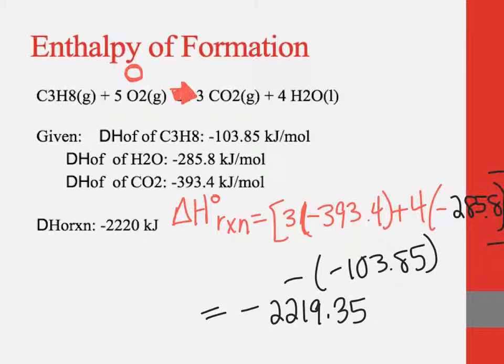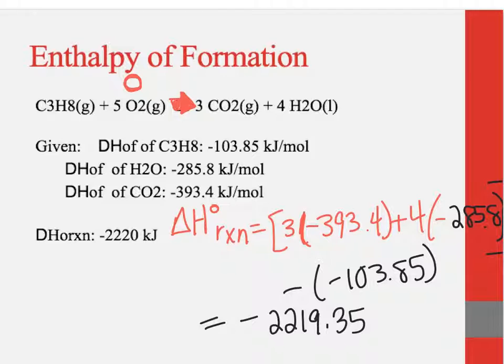I'm not sure what happened to this slide, but it didn't record what I was saying. So here we have the combustion of propane, C3H8(g) + 5 O2(g) → 3 CO2(g) + 4 H2O(l). They give us the delta H for all of the reactants, except for oxygen gas, which wouldn't get a delta H because it's in its free state and it would be zero. So, following our protocol, delta H of the reaction is going to be the sum of the products minus sum of the reactants. So we have 3 times negative 393.4, plus 4 times negative 285.8, minus the propane which is negative 103.85. And the exact answer we get is negative 2,219.35 kilojoules.